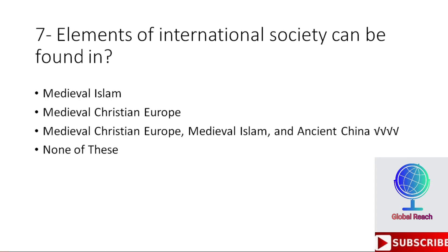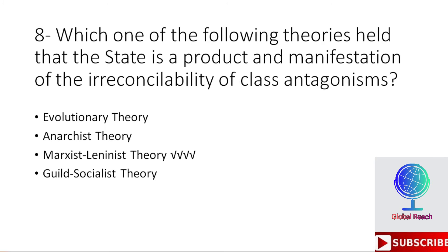Seventh MCQ: Elements of international society can be found in — options are medieval Islam, medieval Christian Europe, medieval Christian Europe and medieval Islam and ancient China, none of these. The correct option is the third: medieval Christian Europe, medieval Islam, and ancient China. Elements of international society can be found in all of these eras.